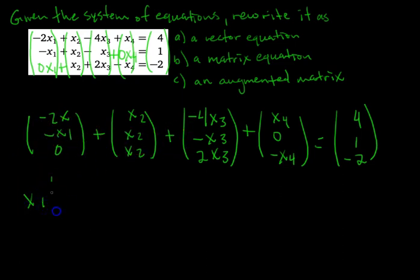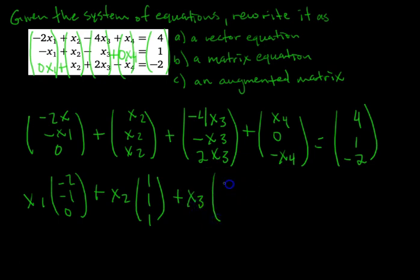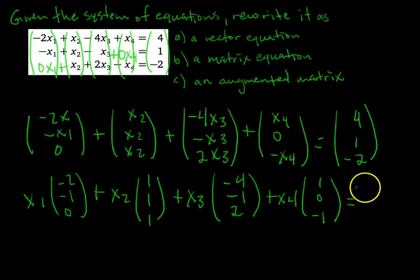So we have x1 times negative 2, negative 1, 0, plus x2 times 1, 1, 1, plus x3, negative 4, negative 1, 2, plus x4, 1, 0, negative 1, equals 4, 1, negative 2.